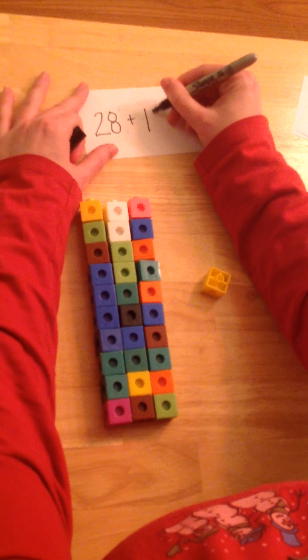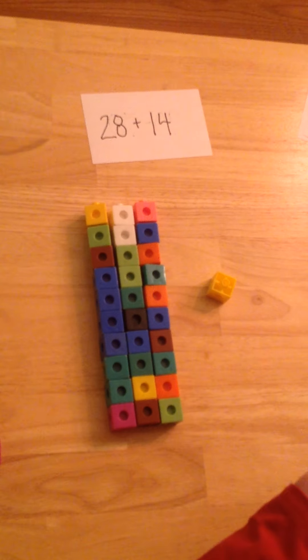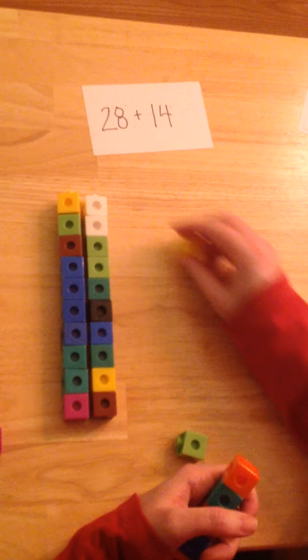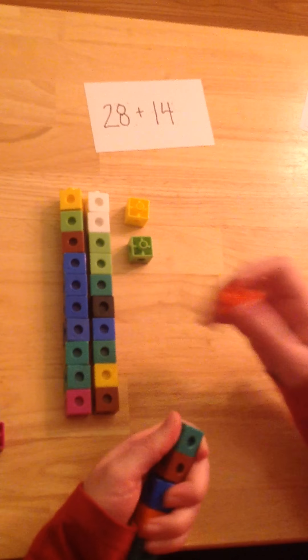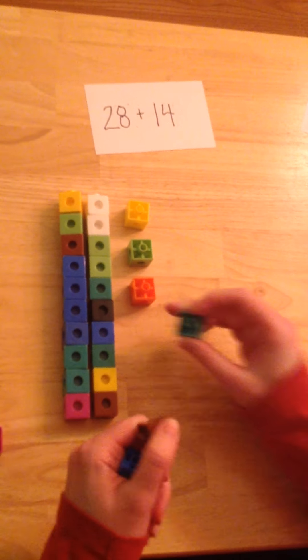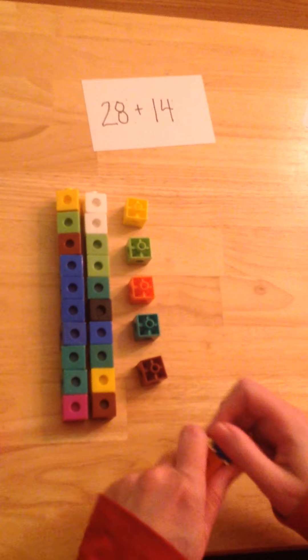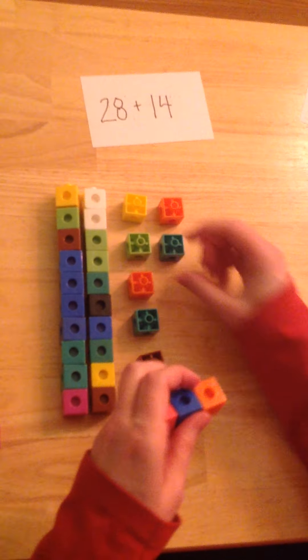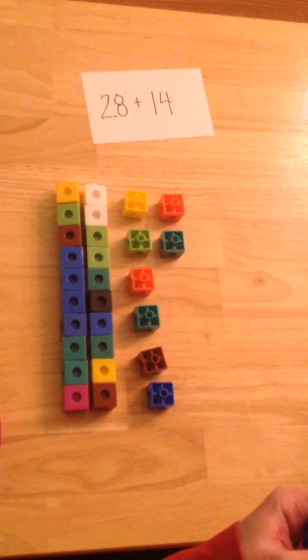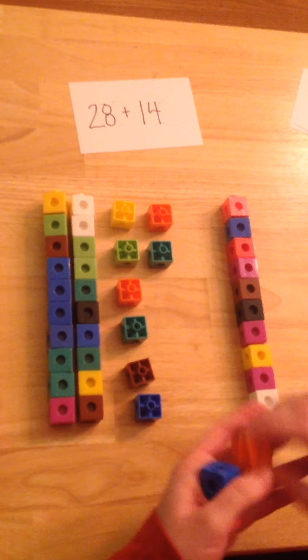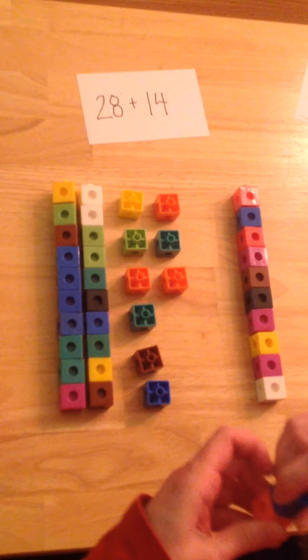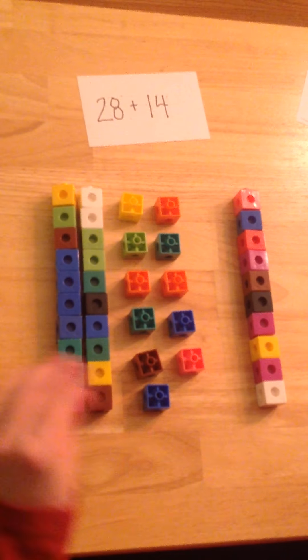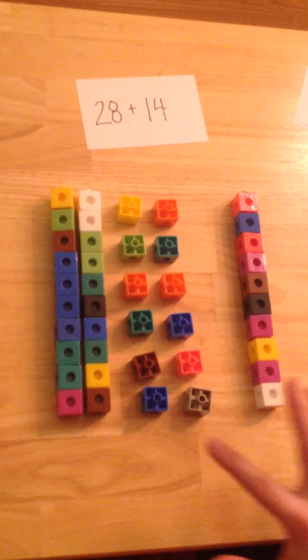Next we're going to do 28 plus 14. I'm going to put 2 10s for my 20. 1, 2, 3, 4, 5, 6, 7, 8. And then I'm going to put 1 10 for my 14 and 1, 2, 3, 4. I'm going to count my 1s first.